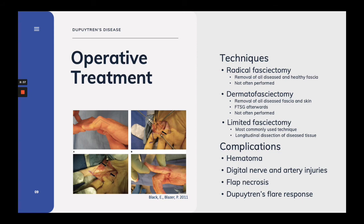Surgical treatment involves the excision of the diseased fascia. Numerous surgical treatments exist, including radical fasciectomy, which includes removal of all diseased and healthy fascia, or a dermofasciectomy, which involves removal of all diseased fascia and skin with a full thickness skin graft laid on afterwards. Both of these procedures are not often performed. A limited fasciectomy is the most commonly used technique — it involves longitudinal dissection of diseased tissue, and typically only diseased tissue is removed. Great care must be taken to identify and protect the neurovascular bundle. In this image here, you can see approximately a 60-degree contracture at the PIP. Intraoperative photographs reveal the neurovascular bundle proximally displaced, as indicated by the arrow, and the clamp is on the proximal aspect of the cord.